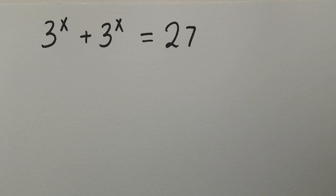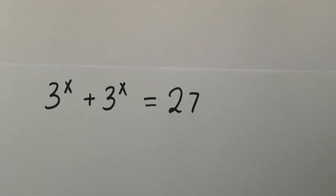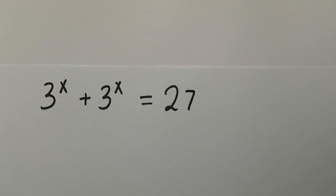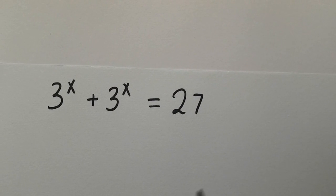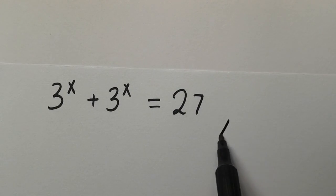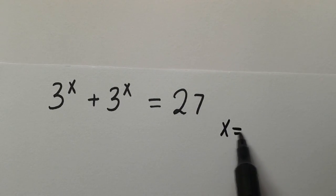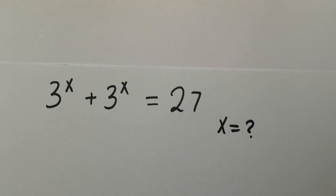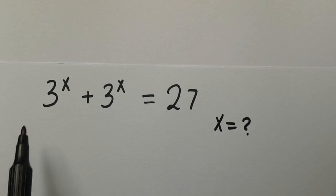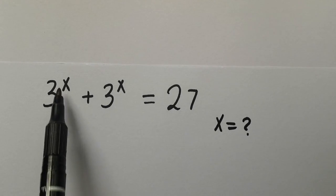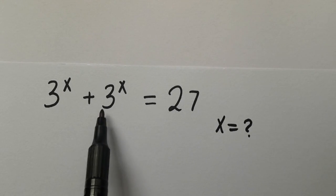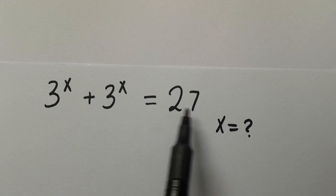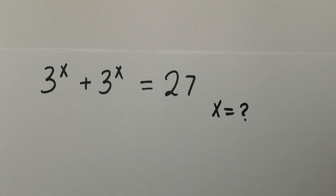Hi guys, you are all welcome back to my YouTube channel. Today we want to find the possible value of x, given that 3 to the power of x plus 3 to the power of x equals 27.